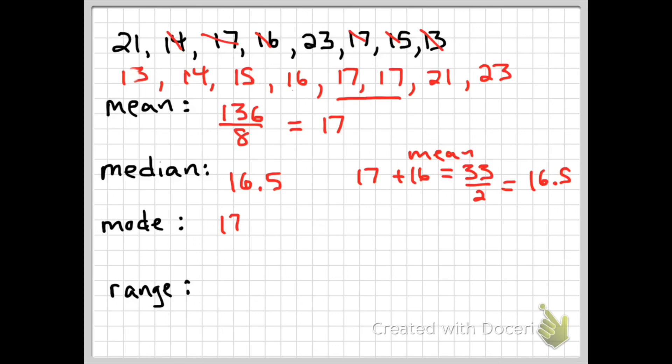Our range is taking the biggest number of our set and subtracting it with the smallest to find the range. So for that we got 23 minus 13, giving us a result of 10.